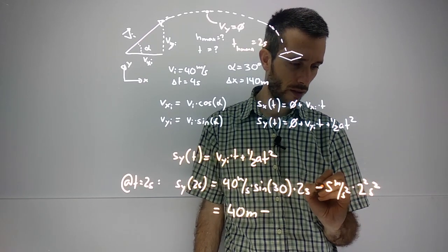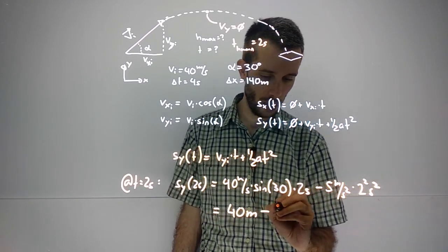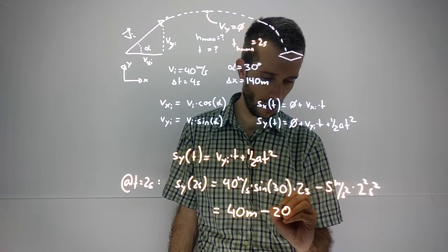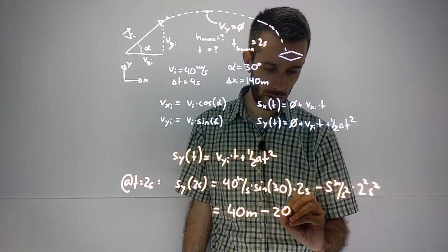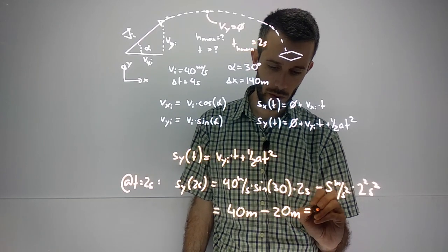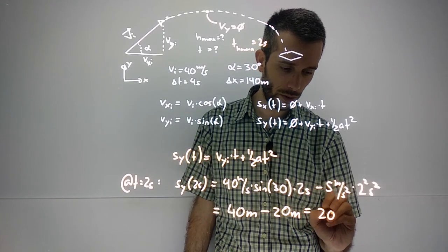2 squared is 4, so 5 times 4 is 20 meters. 40 minus 20 meters gives you a final height of 20 meters.